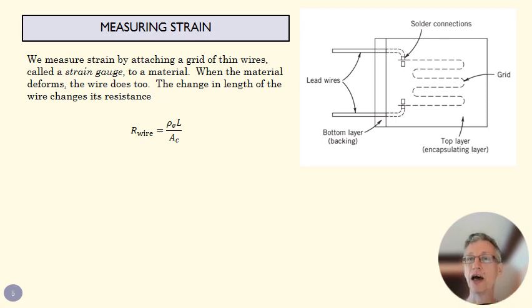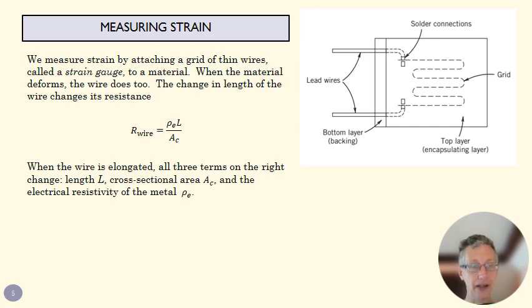We can then use an equation for the resistance of a wire and recognize that when that wire is stretched or compressed, each of these is going to change. This is the length of the wire, this is the cross-sectional area of the wire.